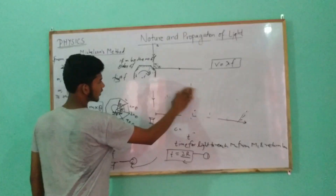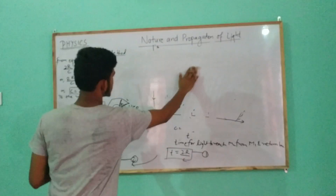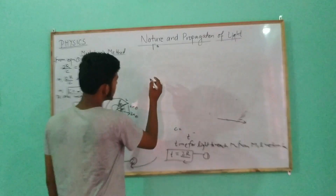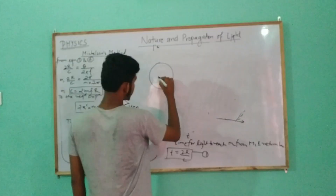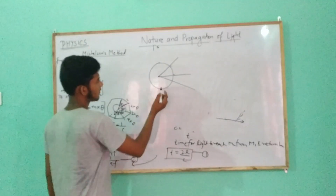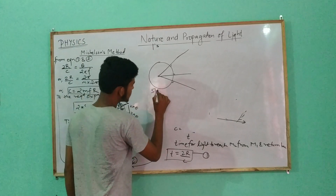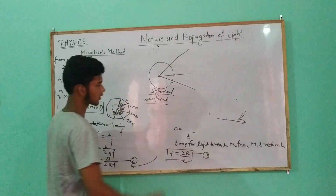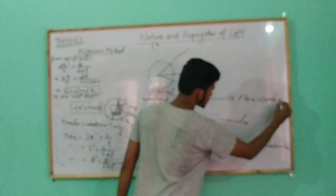Another question is about the spherical wave front. The point source produces a spherical wave front. The wavefront must be perpendicular to the rays. So this is a perpendicular spherical wave front. At a very large distance, it becomes a plane wave front.